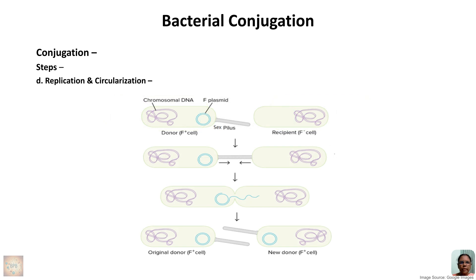All the steps are summarized in this diagram. First, a sex pilus forms in the donor bacterium, encoded by genes of the F-plasmid. Using the sex pilus, a link is made between donor and recipient cells. Through this link, one strand of plasmid is transferred to the recipient cell. After complete transfer, each single strand in both cells makes a complementary strand. Thus, after conjugation, the recipient bacterium is converted into a donor bacterium because of the transfer of genetic material through direct cell-to-cell contact.